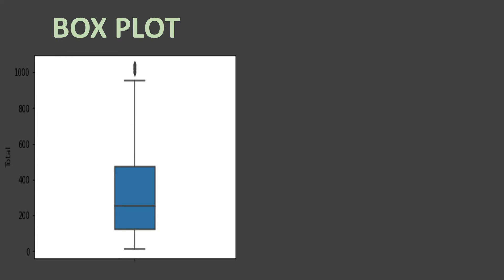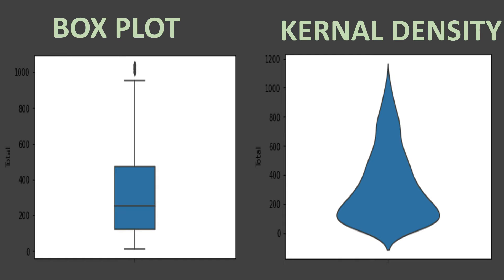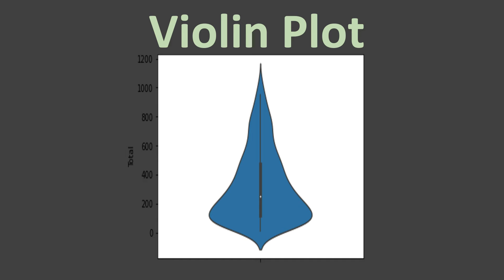Now let's understand the box plot. I would recommend you to watch the box plot video first and then continue here. In the box plot we covered all these elements. This is the box plot, and here we have the kernel density plot. When both of these are combined together, it makes a violin plot. In the middle of the violin we have one box plot which provides the inner quartile information — minimum, quartile one, median, quartile three, and maximum — and this density is called the kernel density estimation. This is all a violin plot is in a nutshell.